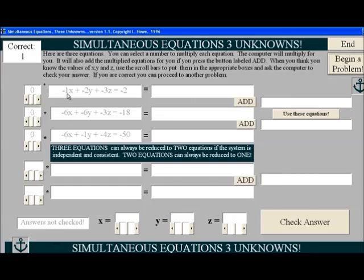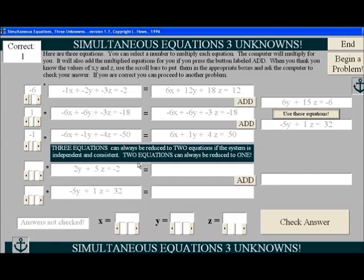First thing we want to do is eliminate these x's. Magic number is 6. I'm going to multiply this by negative 6 and this by 1. And kill off the x's. Now I'm going to kill off the x's here. So I only need this one 1 and this one be negative 1. Kill off these x's. Use these equations. Come down here.